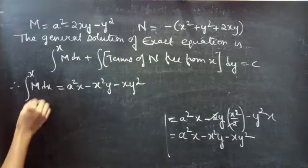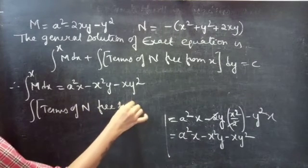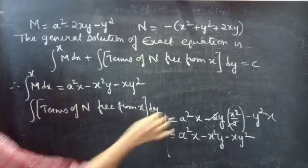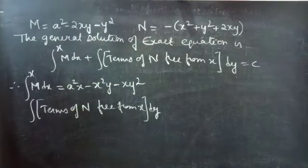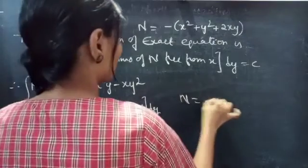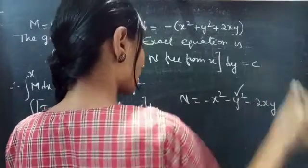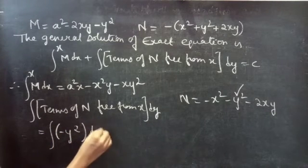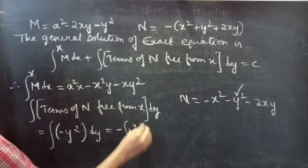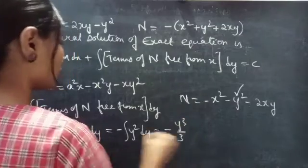Now let's consider the second integral — integral of terms of N free from x into dy. We have N equals to minus x square minus y square minus 2xy. The term which does not involve x is minus y square. So this equals to integral of minus y square dy, which equals to minus y cube by 3.